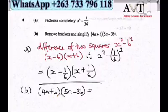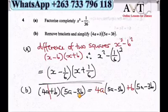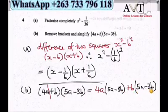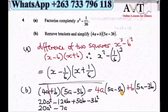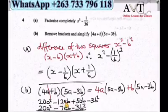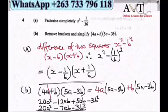Question 4b: Expand (4a + b)(5a − 3). We multiply each term in the first bracket by the second bracket: 4a(5a − 3) + b(5a − 3), giving 20a² − 12ab + 5ab − 3b². Grouping like terms: 20a² − 7ab − 3b².